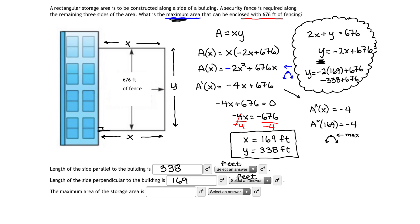And finally, the maximum area of the storage area. To get the maximum area, we have to take 169 and multiply it by 338. So pulling out my calculator, 338 times 169 gives us 57,122 square feet. Square feet this time, because we're measuring area. And that's it. We have answered the question, what is the maximum area that can be enclosed with the 676 feet of fencing?